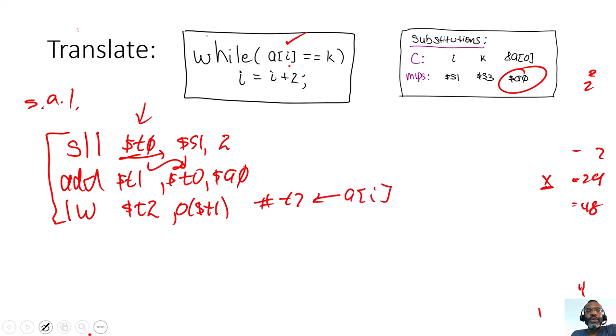Now that I have it, I want to do a comparison with A sub i and k. And if A sub i is not equal to k, so I'll try a branch if not equal. If A sub i, which is inside of T2, is not equal to k, which is inside of register S3, if they're not equal, then I want to exit the while loop. Otherwise, if they are equal, continue on to the next line.